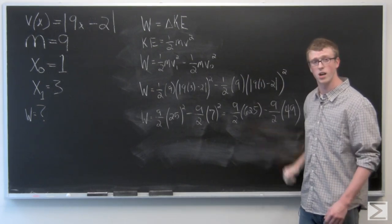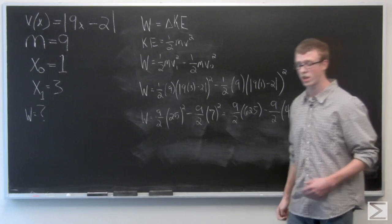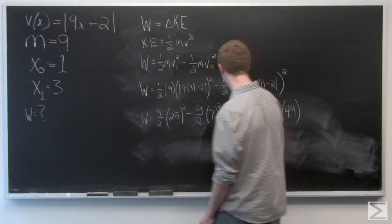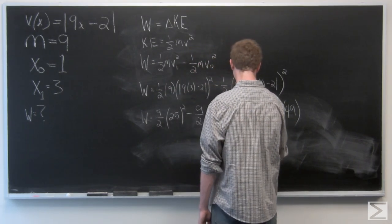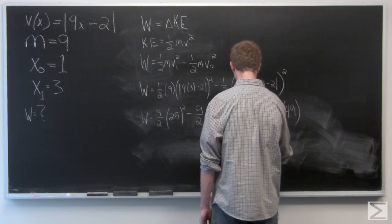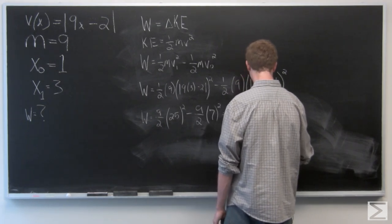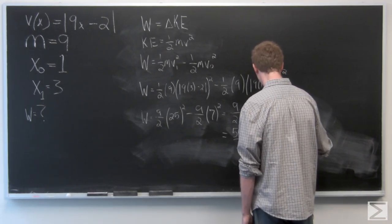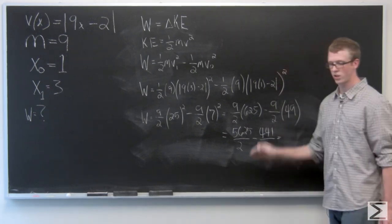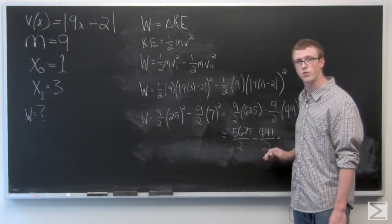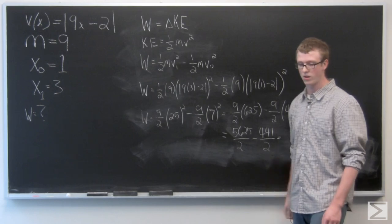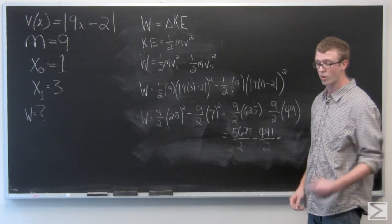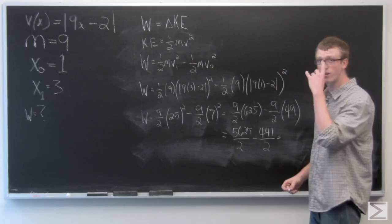Now what we need to do is a quick simplification here. I'm just going to check my notes. So you get 5625/2 minus 441/2, and that simplifies to 5184/2, which is really just 2592.